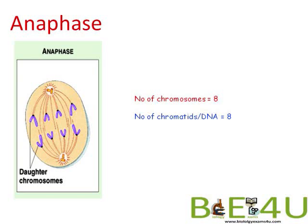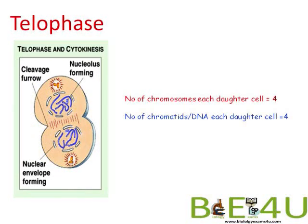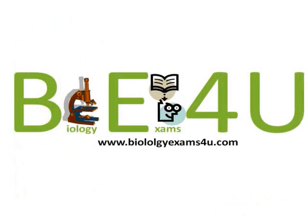Now let us move to telophase. The chromosomes are pulled toward the poles and cytokinesis takes place — the cleavage furrow forms and the nucleolus reappears. After telophase we get two daughter cells. The number of chromosomes in each daughter cell is 4, and the number of chromatids or DNA molecules in each daughter cell is also 4, as each chromosome has a single chromatid. For more detailed notes, log on to www.bioexams4u.com. Thanks for watching.